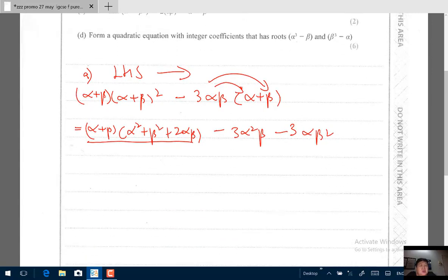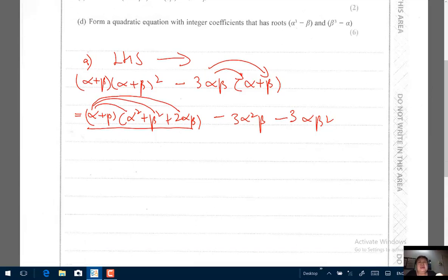So I will start with α times α², α times β², α times 2αβ and so on, and then I will use another color to take the β times α², β times β², β times 2αβ.